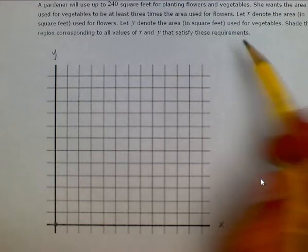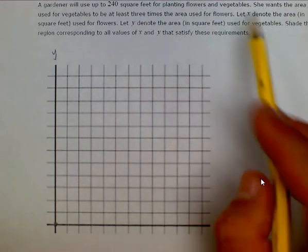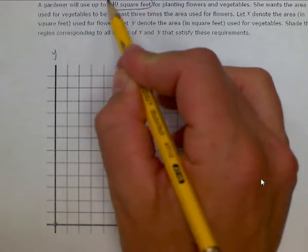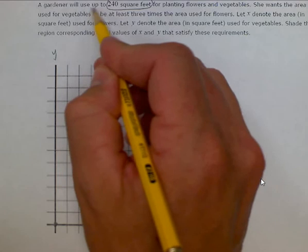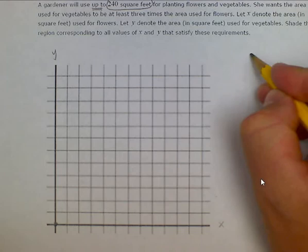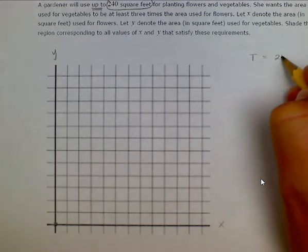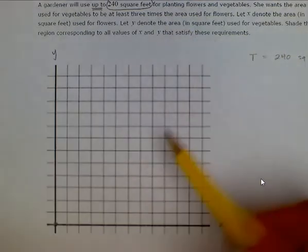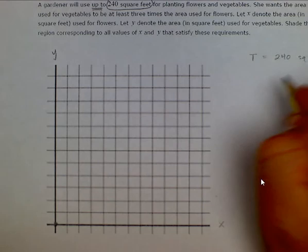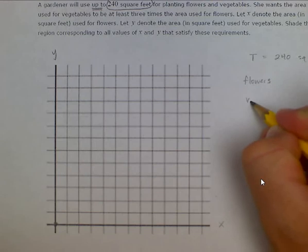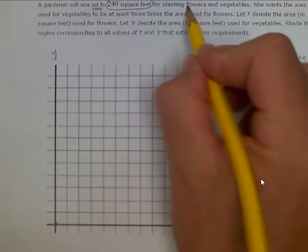Let's circle the important information. The gardener will use up to 240 square feet — so the total equals 240 square feet — for planting flowers and vegetables. We have flowers and we have vegetables.